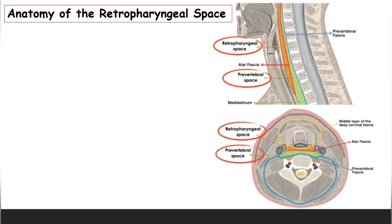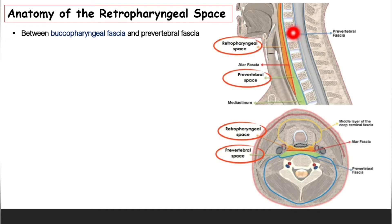This space is located between the buccopharyngeal fascia and the prevertebral fascia. If you look here, you'll see the prevertebral fascia here in blue. The buccopharyngeal fascia covers the pharynx on the upper part and superficially.